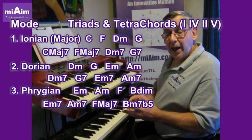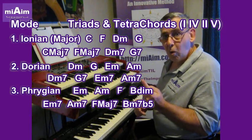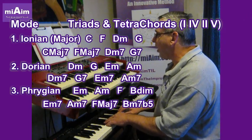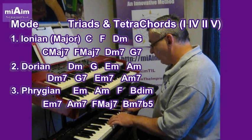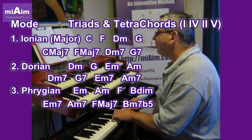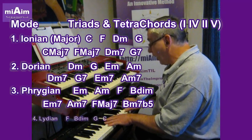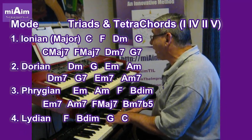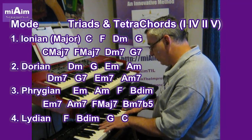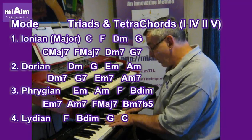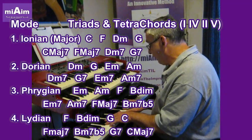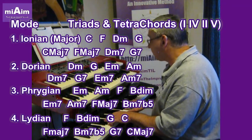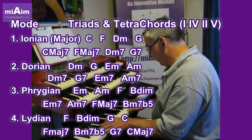The Lydian is number 4, where we call 4 as 1. So in this case it'll start on F. And you can hear it change really differently — tone, tone, tone, semitone, tone, tone, semitone. So the triads will be F, B diminished, G, and C. The tetrachords will be an F major 7th, a B minor 7th flat 5, G7, and a C major 7th.